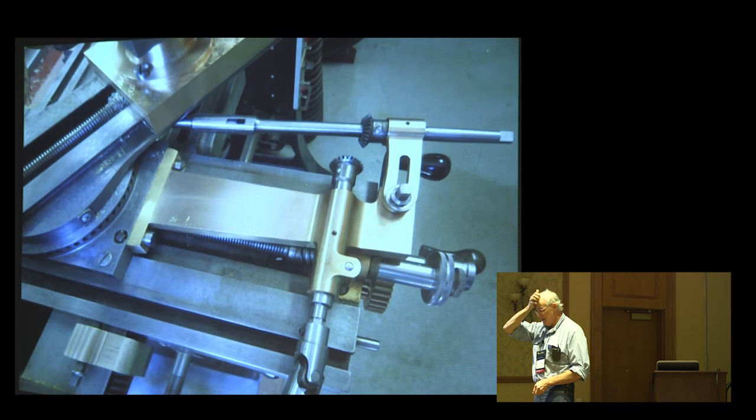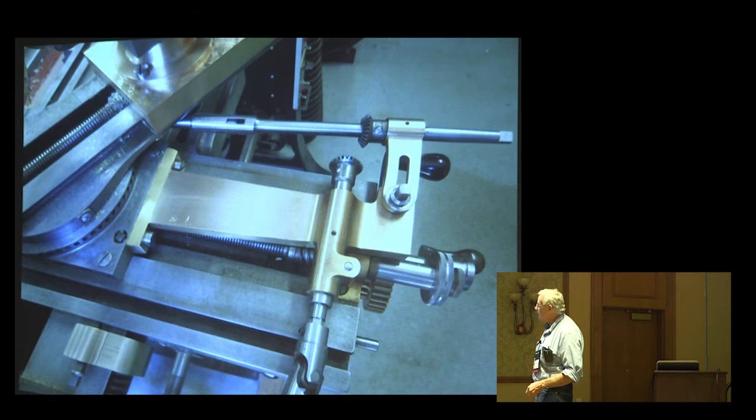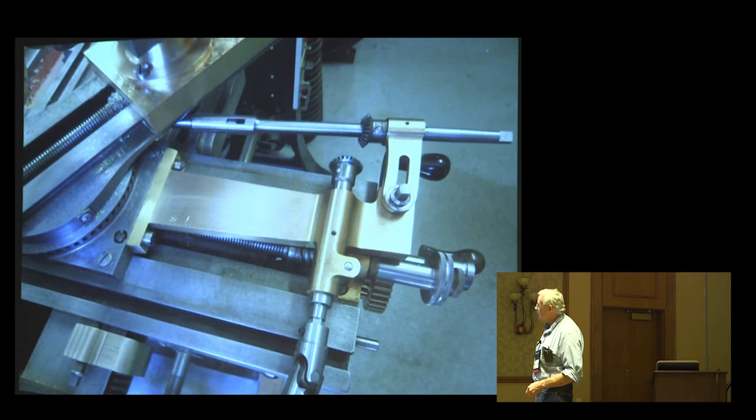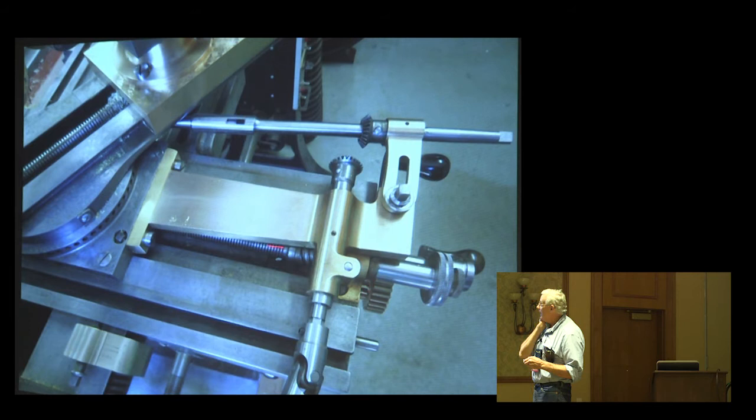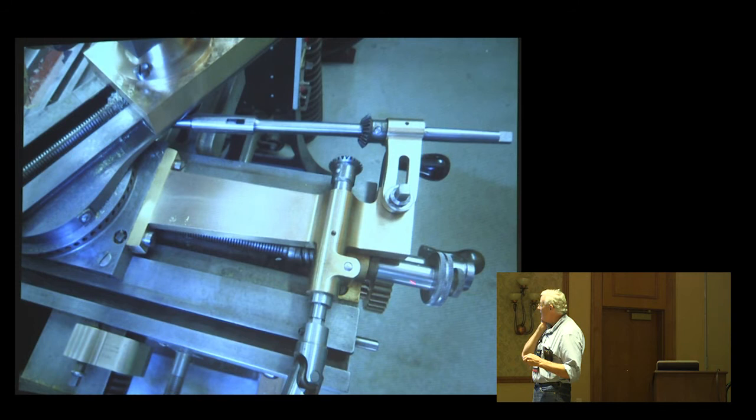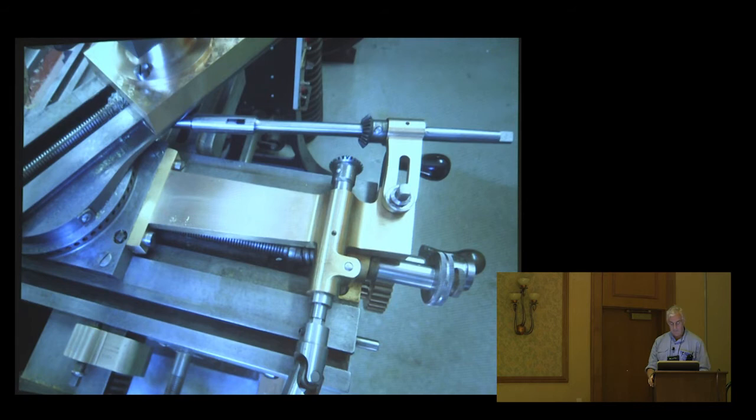I mentioned already that for me, the tool is as much an end as a means, and one of the problems that causes is whenever I start to do something, I seem to discover a whole list of attachments I have to make to be satisfied with the way the process is going to occur. When you mount this slide rest, you have to take off the handle on this screw, and yet there's a nut in there. So first I had to make that handle so I could still turn the stupid thing. I'll show some other devices that I made to get on with the job.